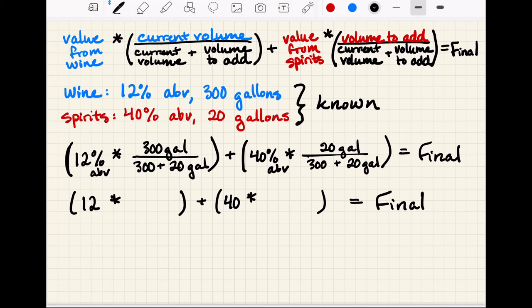So let's say we have a wine that is 12% ABV. We have 300 gallons of it. Then for our spirits, we have 40% ABV and we have 20 gallons of it that we are going to blend into that wine. So we take that equation up here at the top and we just plug in our values. So we end up with 12% times 300 over our total volume of 300 plus 20. That's our component one. And then we add that to our component two. So we have 40% times 20 over that final total volume.